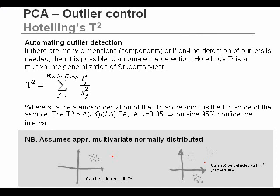An important underlying assumption of Hotelling's T² is that your data come from a multivariate, normally distributed population — basically, that your data come from one distribution. If you have a sample set with different groupings, an outlier lying in between all the groups will not be detected by the T². But looking at it visually, you could easily detect it as an outlier. Still, Hotelling's T² is very efficient for automating outlier detection.